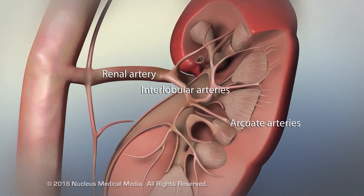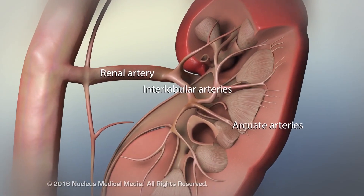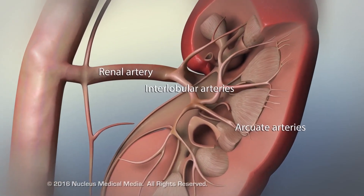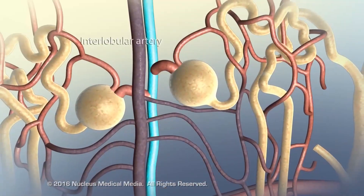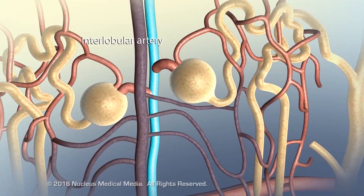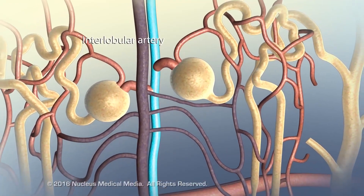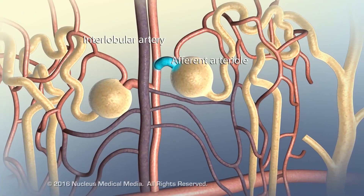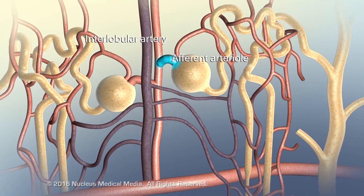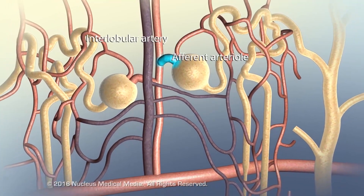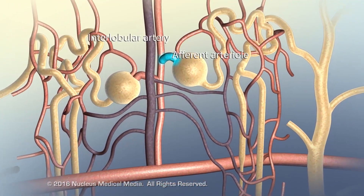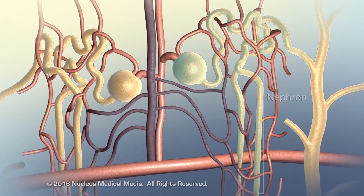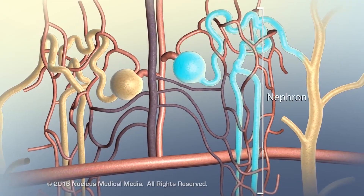Branches of the renal artery supply each renal lobe. The smallest branches of the renal artery, called afferent arterioles, supply the excretory components of the kidney, called nephrons.